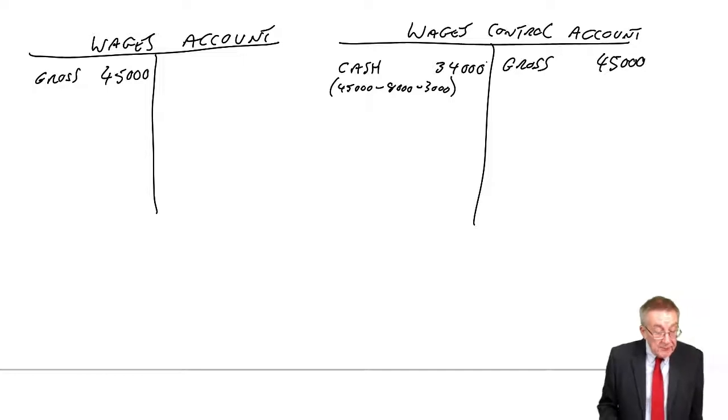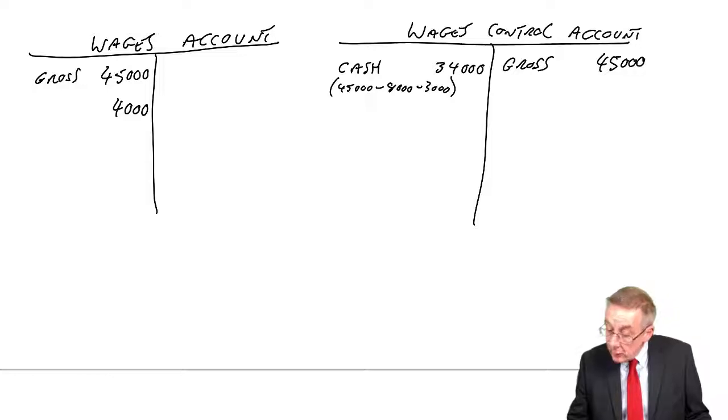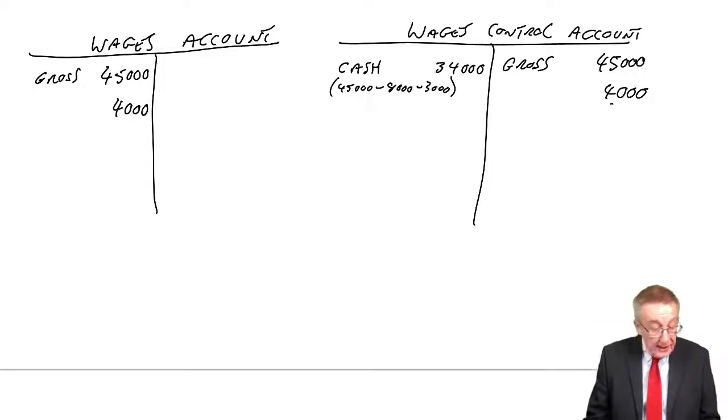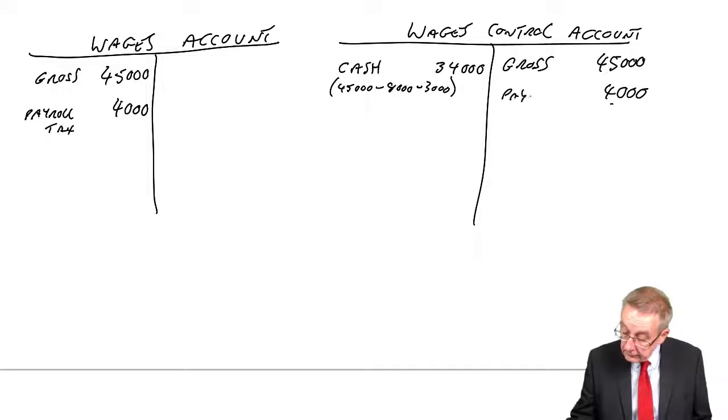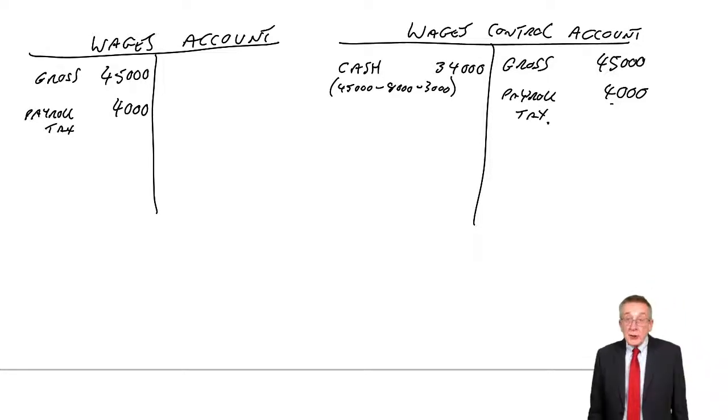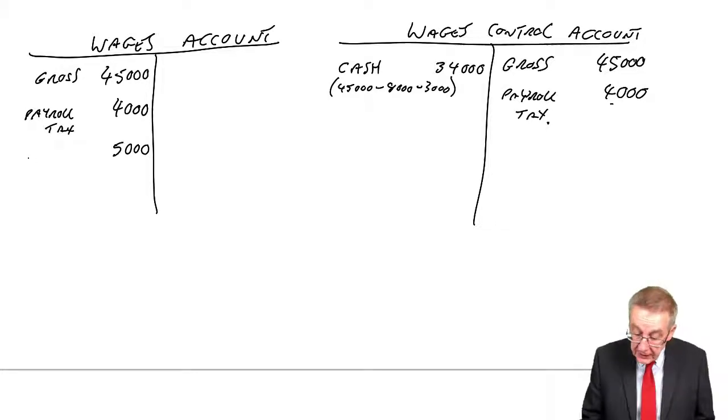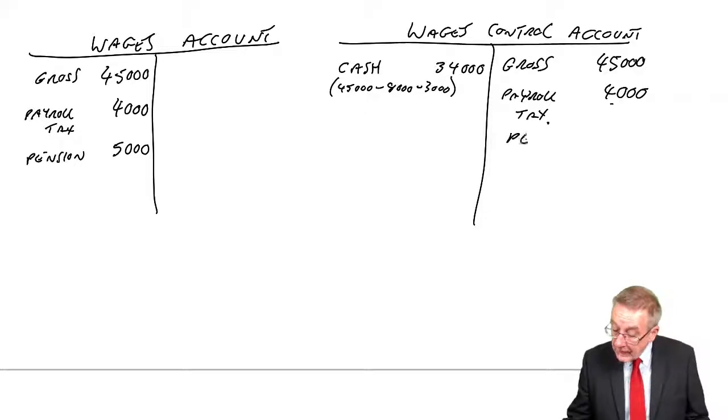Next one. On 31st of March, the employer's payroll tax is calculated at $4,000. So the employer has to pay this. It's an extra cost of employing them. So debit the wages account $4,000. Credit the control account with $4,000. It's the employer's payroll tax. An extra cost, an extra expense. And similarly, the employer has an extra cost. These pension contributions are $5,000. It's an extra expense, debit the wages account. Credit the control account.